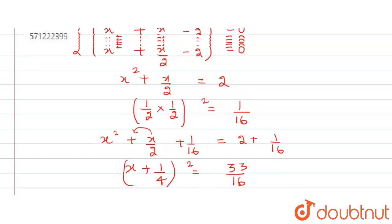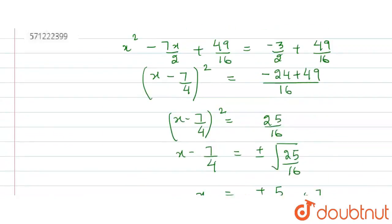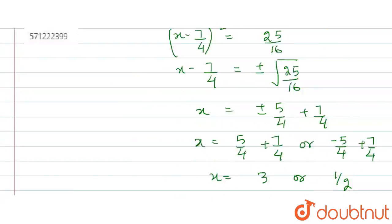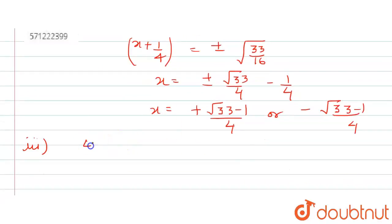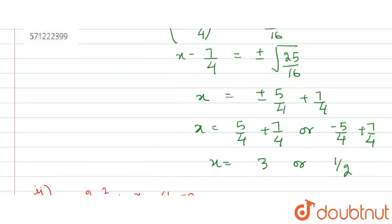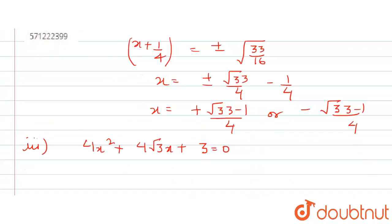The third equation is 4x² plus 4√3 x plus 3 equals 0. Applying the method of completing the square, taking out 4 as a common factor.